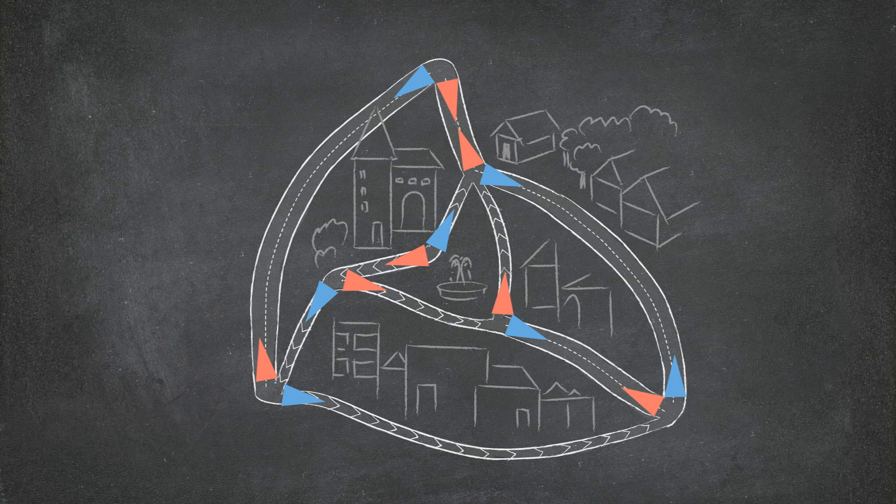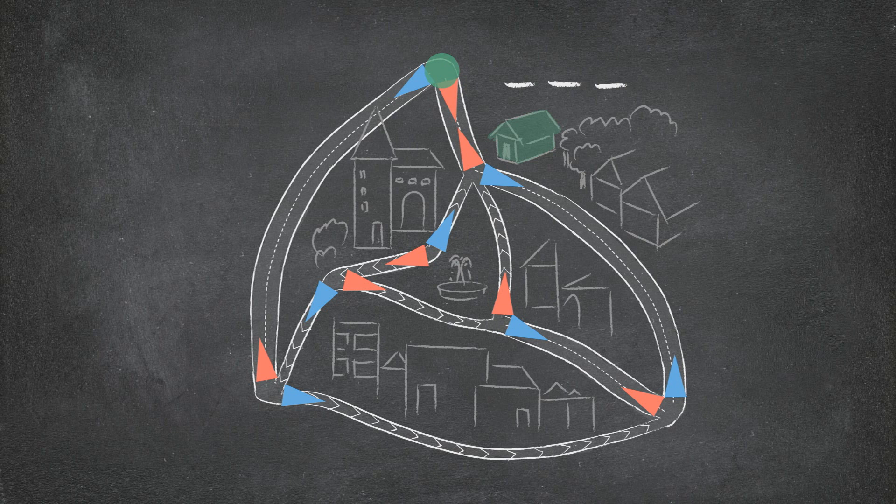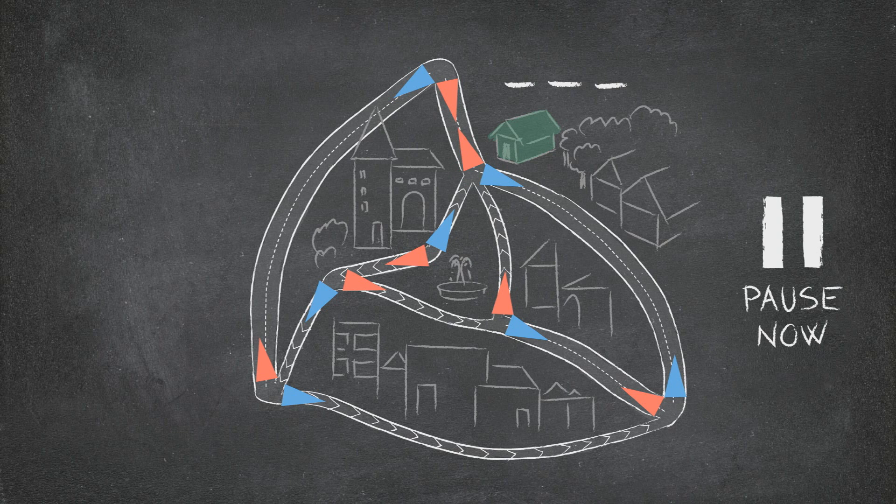Now, I claim that regardless of where he is, you can direct your friend to your house in exactly three moves of left or right. Your route doesn't need to be the shortest possible one. In particular, it's fine if you send your friend down the same street they just came from, or even if they pass your house sometime during their drive. The important thing is that after the three moves, he should definitely be at your house, no matter where he started from. Hit pause and try to figure out how.